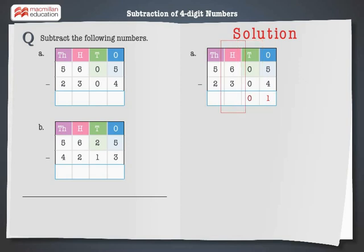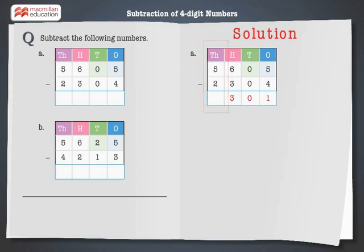Next, subtract the hundreds — 6 minus 3 is equal to 3. Finally, subtract the thousands — 5 minus 2 is equal to 3.